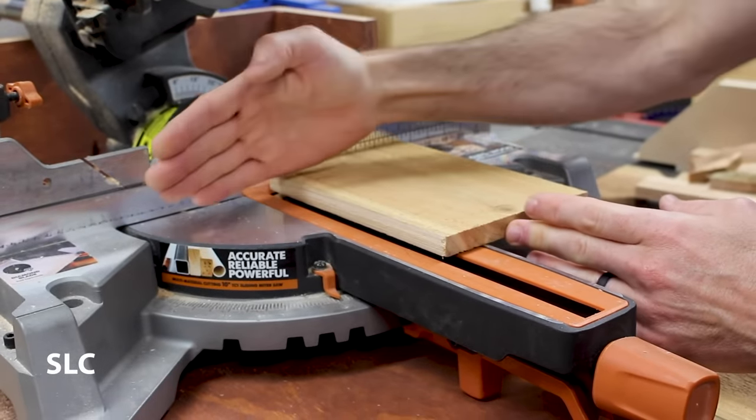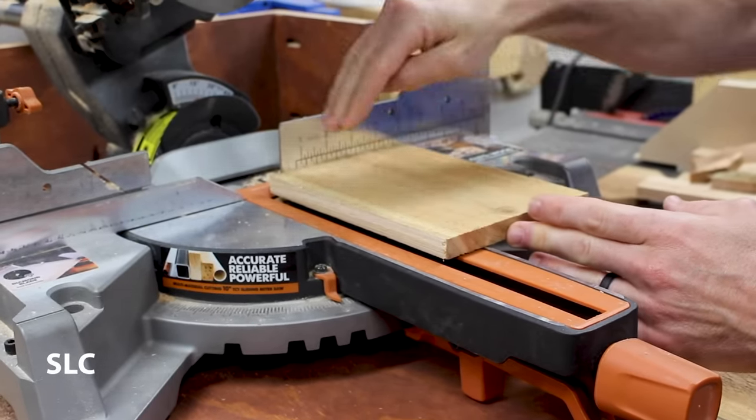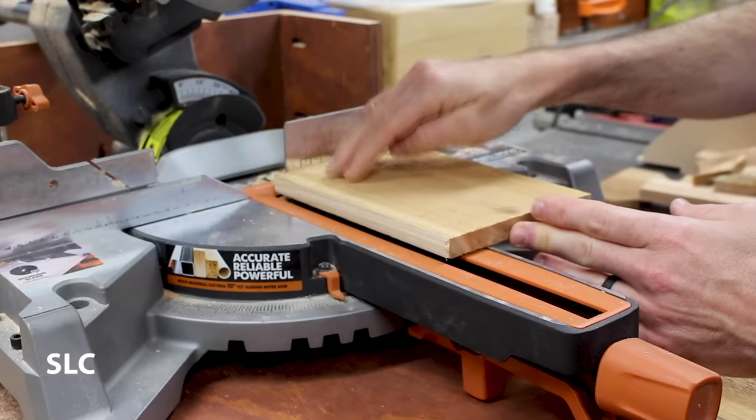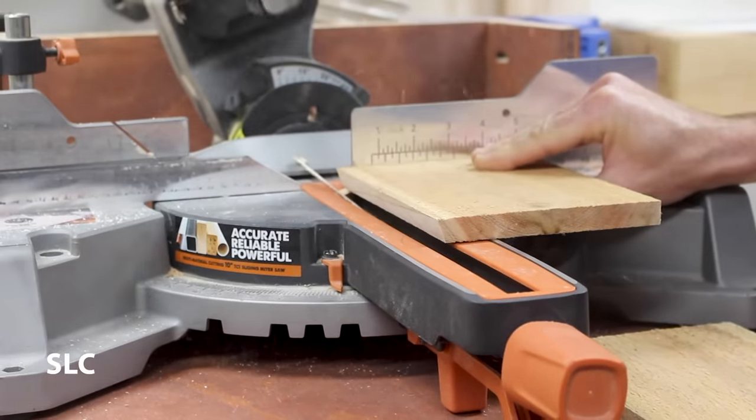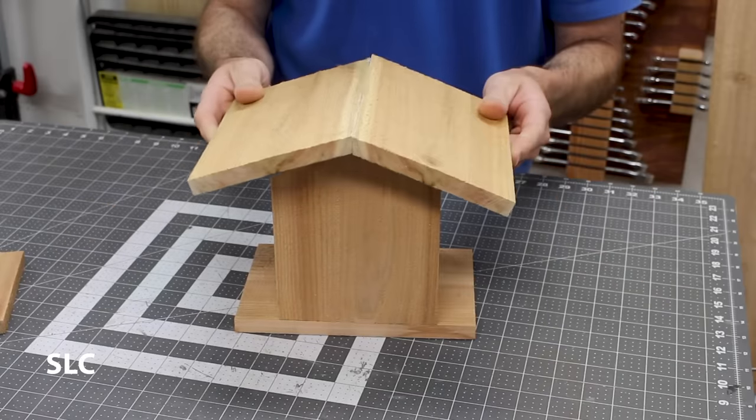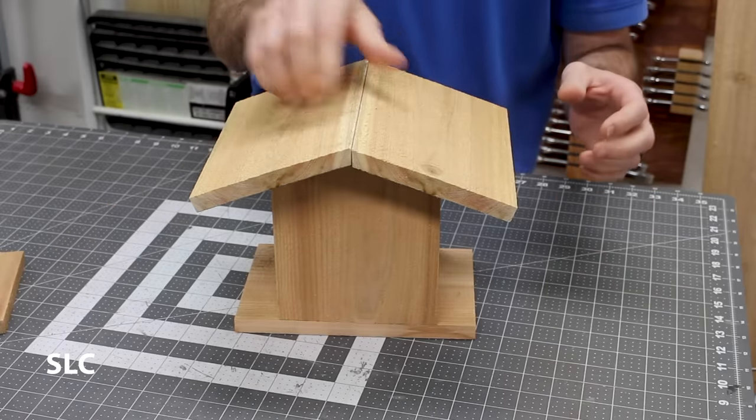Now keep in mind that the miter saw is usually set up for cross cuts, not really long cuts like this. So it's a little dangerous, so be careful if you're going to do this. Now here's a little quick test fit and that's going together quite nicely.